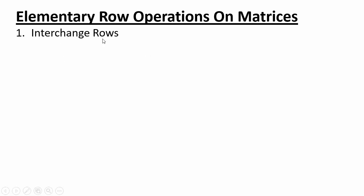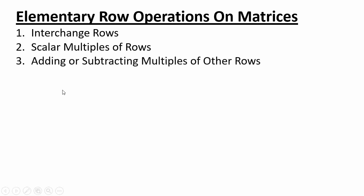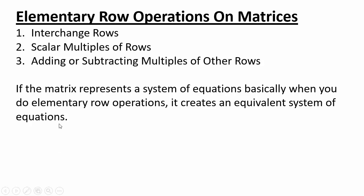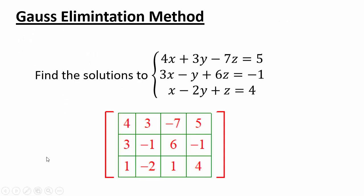So what are elementary row operations on matrices? You can interchange rows, because that doesn't change the system of equations — you're just rewriting which equation goes first. You can multiply a row by a scalar, because that still creates an equivalent system. You can add or subtract multiples of other rows to a row. Basically, an elementary row operation is one in which the system becomes an equivalent system with the same solutions. No other operations are allowed. So let's use the Gauss elimination method — our goal is to create ones on the diagonal and zeros everywhere else.